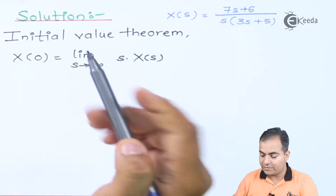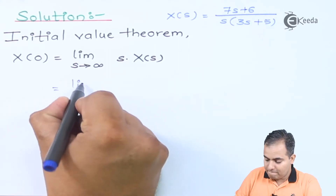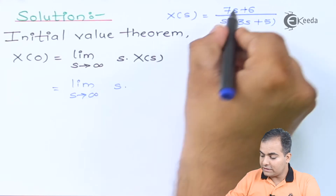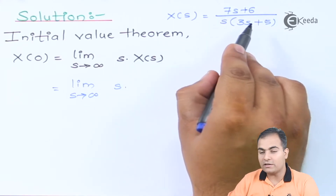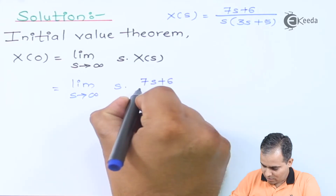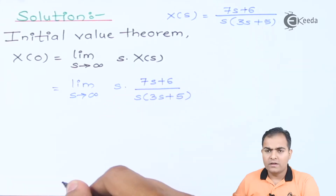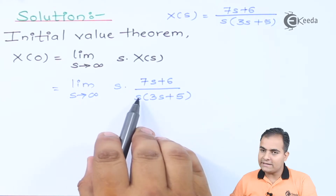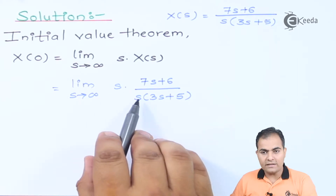I am going to replace X(s) with the given function. So the function is (7s + 6) divided by s times (3s + 5). Now you can see that the two s terms can get cancelled, so directly cancel them.